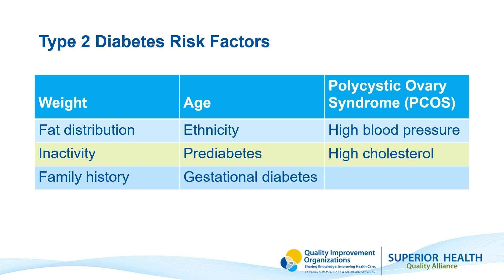The ethnicity group that you are in can be a factor. Having pre-diabetes is a warning sign that you are at risk for developing type 2 diabetes. Having had gestational diabetes or delivering a baby weighing more than 9 pounds can also put you at risk. Women with PCOS are at a higher risk as well.